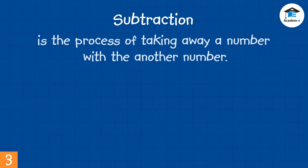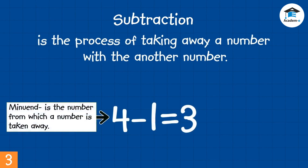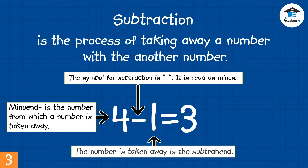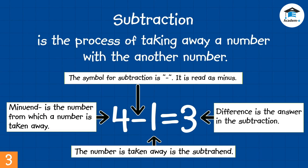Subtraction is the process of taking away a number from another number. The minuend is the number from which a number is taken away. The symbol for subtraction is minus. The number that is taken away is the subtrahend. The difference is the answer in subtraction.